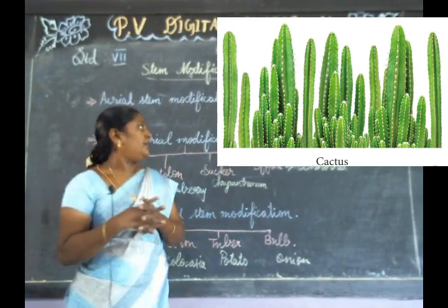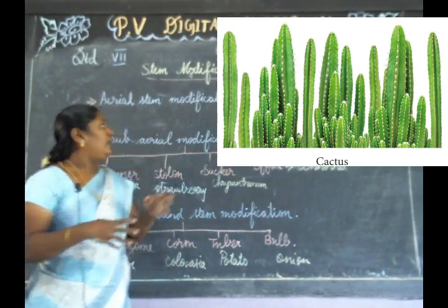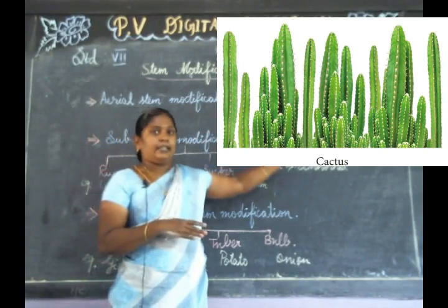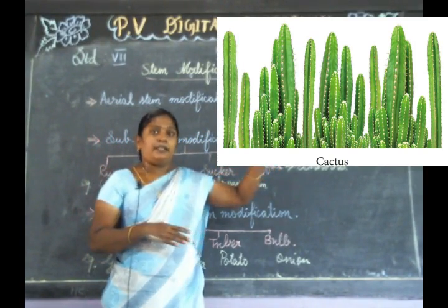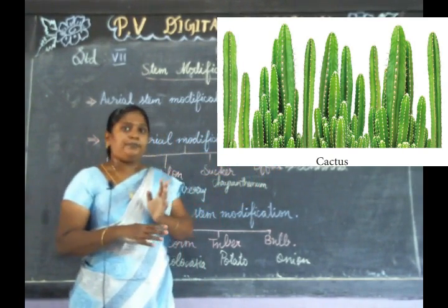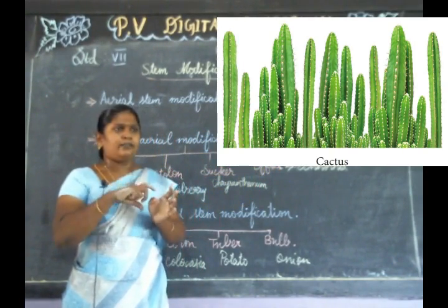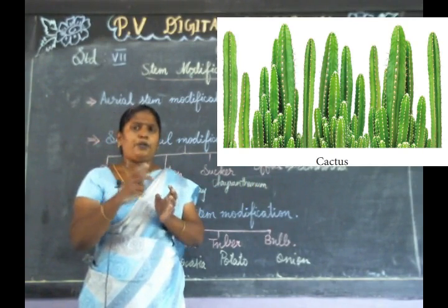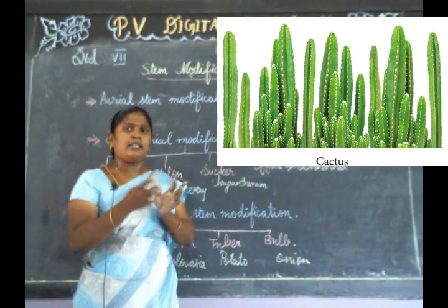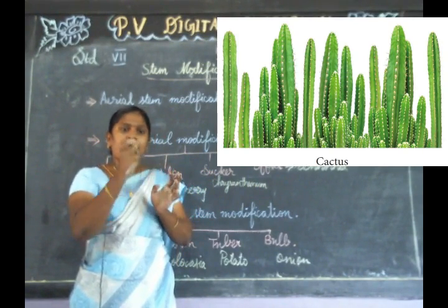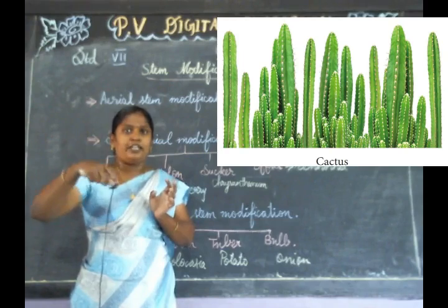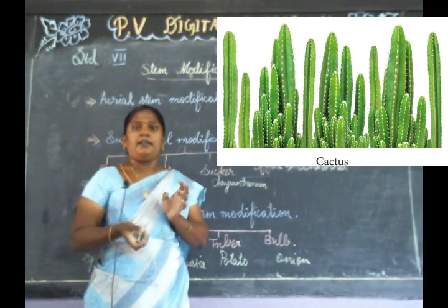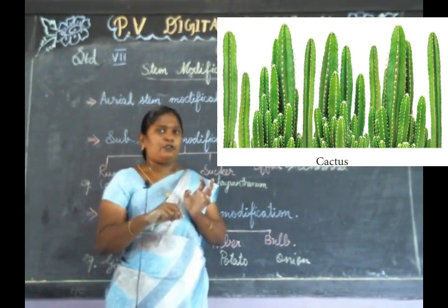It is a phylloclade-like structure. An example is the cactus plant. You can observe it — on a bus or tour, you can see the cactus plant.